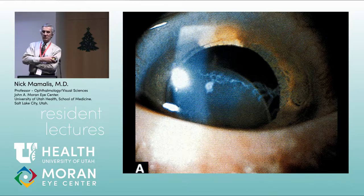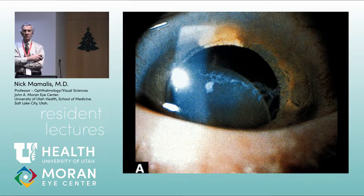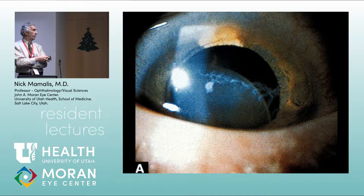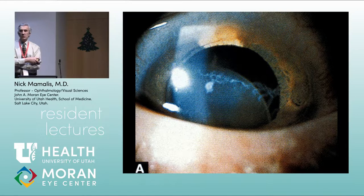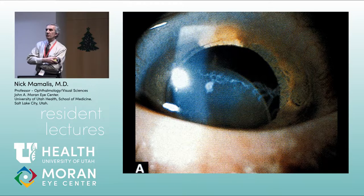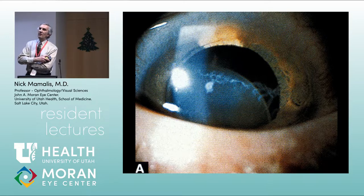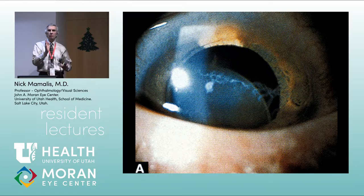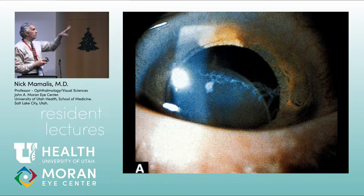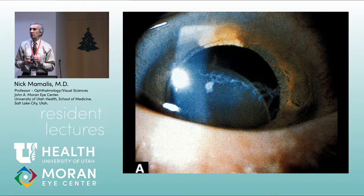This lens is subluxing inferiorly and a little nasally — almost the opposite of Marfan's. There appears to be white wispy material over the superior aspect of the lens: those are the remnants of broken zonular fibers. This is homocystinuria. You must memorize: Marfan's dislocates superior-temporally; homocystinuria dislocates inferior-nasally. Both are zonulopathies, which makes the anti-gravity superior movement in Marfan's hard to explain, but that's where they go. Homocystinuria is a classic boards question — the difference between homocystinuria and Marfan syndrome.